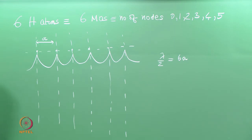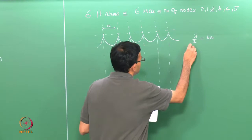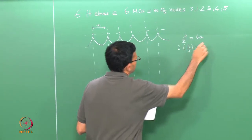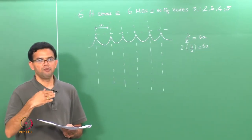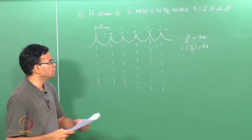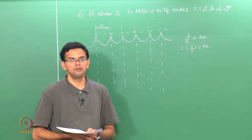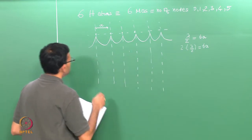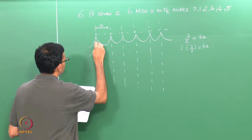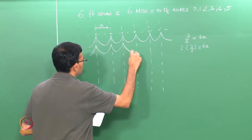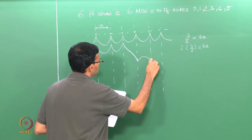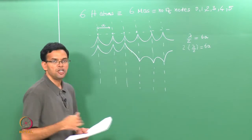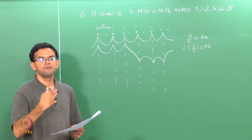The next one is the MO with 1 node, where 2 × lambda/2 = 6a. Now we have 3 lobes up and 3 down, and the function goes to 0 at essentially the middle. Drawing the wave functions, that gives us 1 node, with 3 of the atomic orbitals up and 3 down.